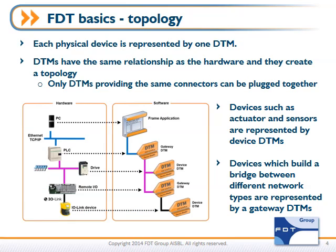The next part of the FDT standard is the notion of topology. Each physical device is represented by a single DTM, and these DTMs have the same relationship as the hardware — together they create a topology. These devices and the DTMs that represent them can be things such as proximity sensors, photo eyes, AC drives, and so on. There's also a special class of DTMs called gateway DTMs, which support devices that bridge between different networks. This means the FDT standard can support any number of networks and seamlessly tunnel between them in complete transparency to the user.